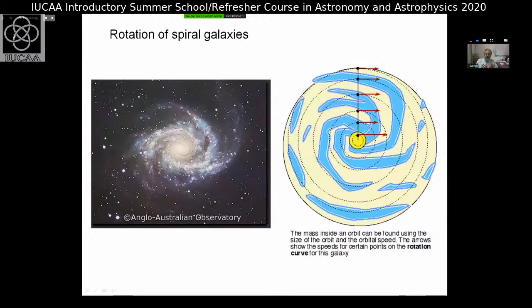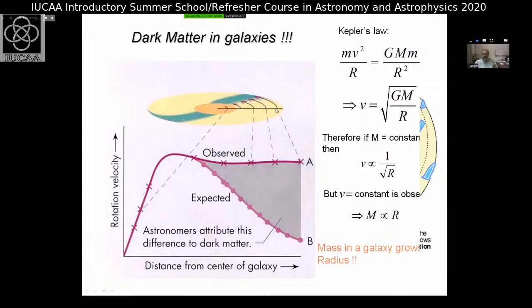You cannot see dark matter, so you have to be smart to infer its presence. Galaxies are not still — like everything else in the universe, they are also in motion. Many galaxies show what is known as a rotation curve: different regions at different distances rotate at different rates, and the mass inside an orbit can be found by noting the rotation speed. Using Kepler's law: mv²/r equals GMm/r², the small m cancels, so v equals the square root of GM/r, where r is the radius from the center.